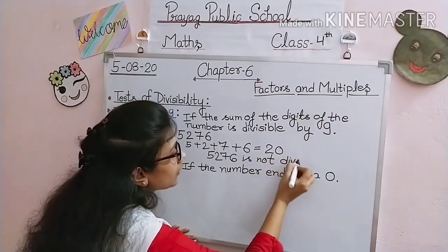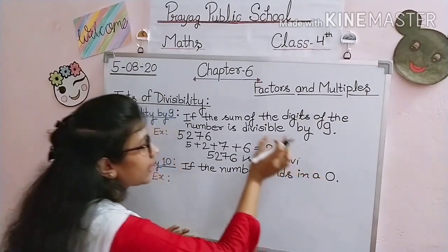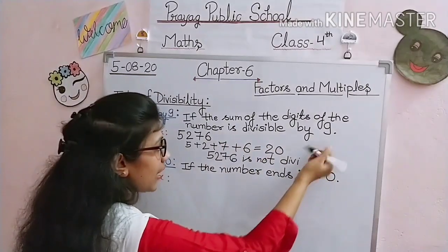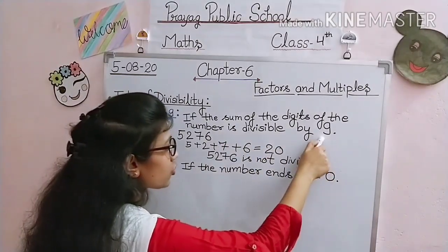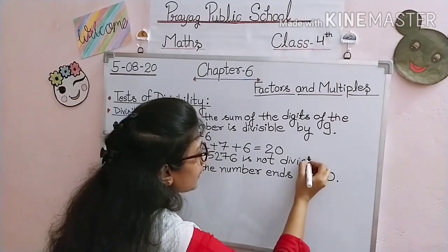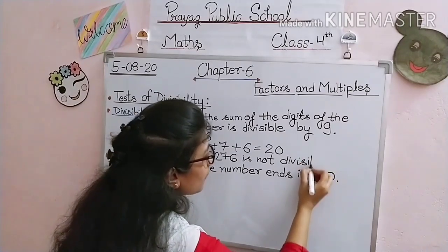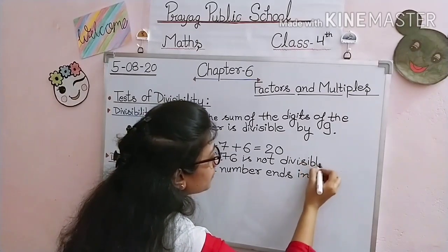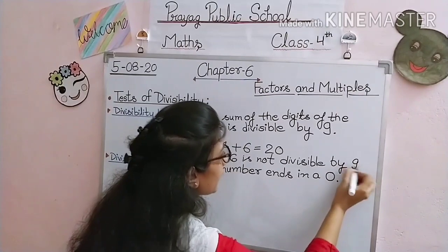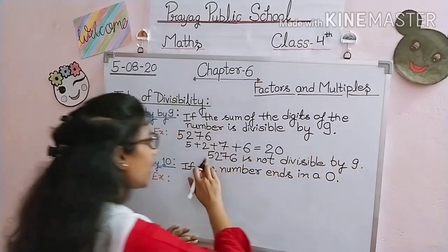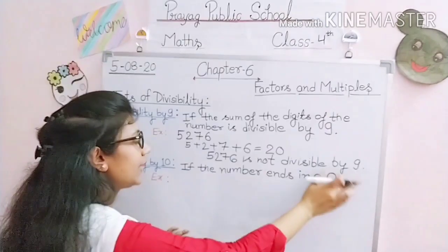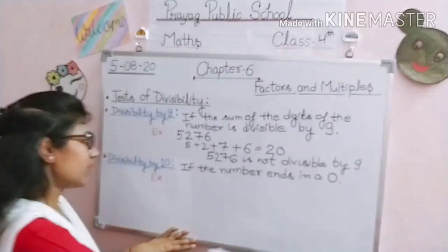If we add all the digits and the sum is divisible by 9, then the number will be divisible by 9. So we write the final statement: 5,276 is not divisible by 9.